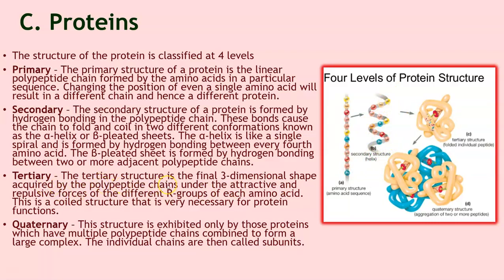Tertiary: the tertiary structure is the final three-dimensional shape acquired by the polypeptide chains under the attractive and repulsive forces of the different R groups of each amino acid. This coil structure is very necessary for protein functions. Here you can see the tertiary structure showing a folded individual polypeptide chain.